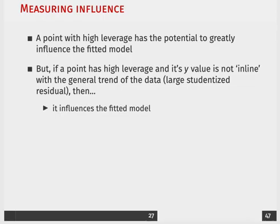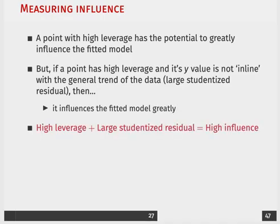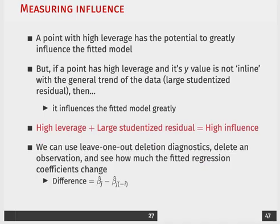So if it does happen to be the case that it's an outlier with regard to both the covariates and the outcome, that's going to actually greatly influence the model probably. So having high leverage and having large studentized residuals means that an observation is likely going to have high influence.